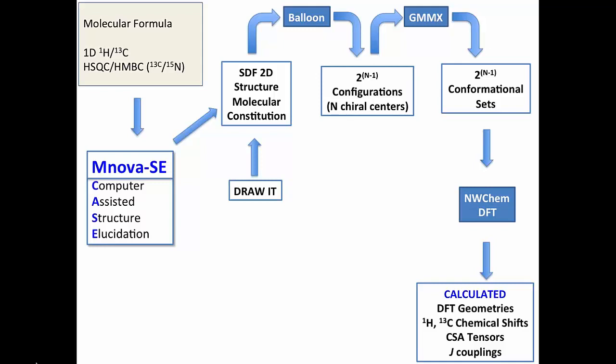Then interacting with NuChem, it will perform DFT calculations. And with DFT calculations, it will calculate DFT geometries, proton and carbon chemical shift, CSA tensors, and J coupling. And then if you provide experimental data that will be analyzed by Ennova, like RDCs, RCSAs, NOE derived distance, chemical shift, and J coupling.